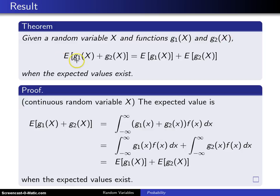then the expected value of g1(X) plus g2(X) is the expected value of g1 of X plus the expected value of g2 of X when the expected values exist. This is another example of why expected value is known as a linear operator.